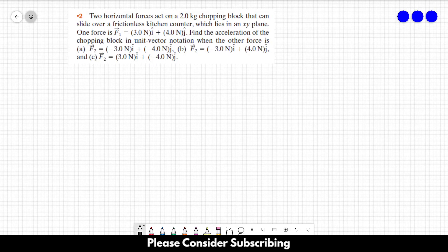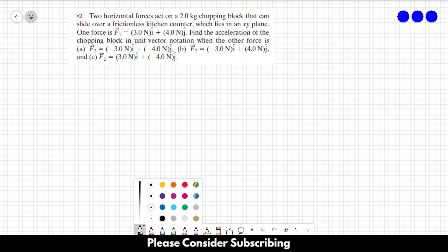Number two, two horizontal forces act on a two kilogram chopping block that can slide over a frictionless kitchen counter which lies in an xy plane. One force is F1 equals three newtons in the i direction plus four newtons in the j direction. Find acceleration of the chopping block in unit vector notation when the other force is, and then we have three different forces over there.